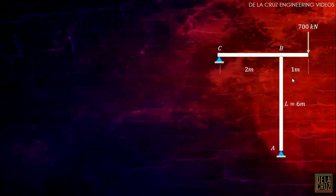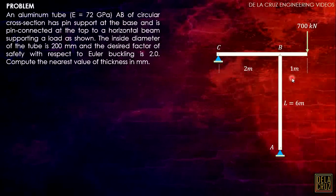An aluminum tube AB of circular cross-section has a pin support at the base and is pin-connected at the top to a horizontal beam supporting a load as shown. The inside diameter of the tube is 200 millimeters and the desired factor of safety with respect to Euler's critical buckling stress is 2.0. We are required to calculate the thickness in millimeters.